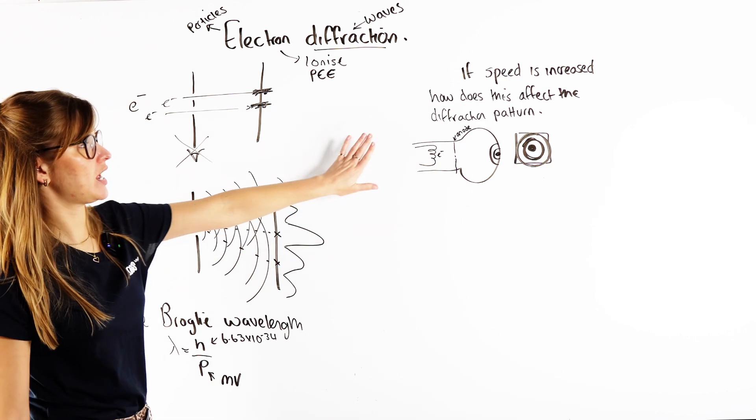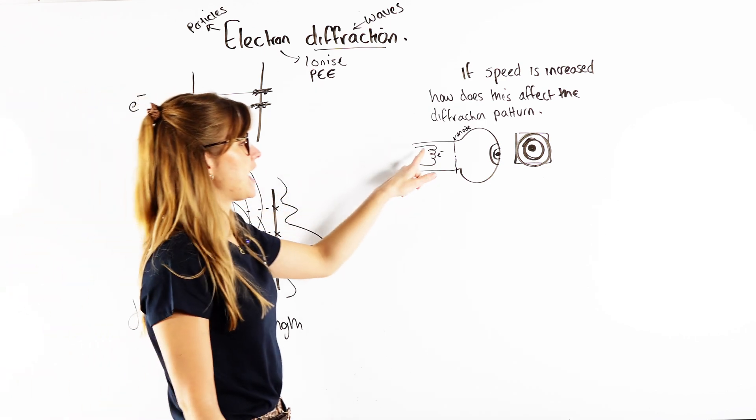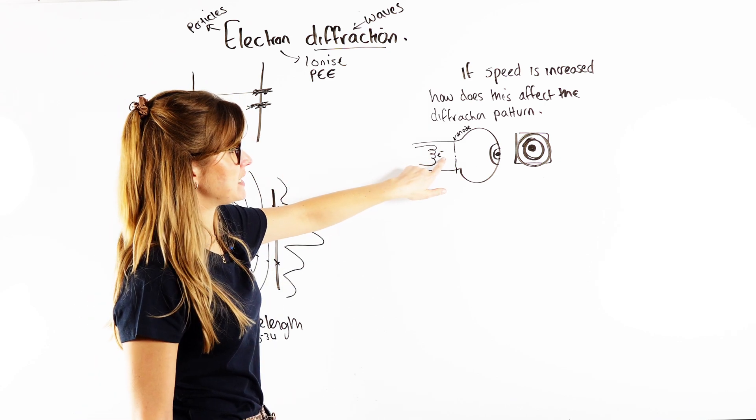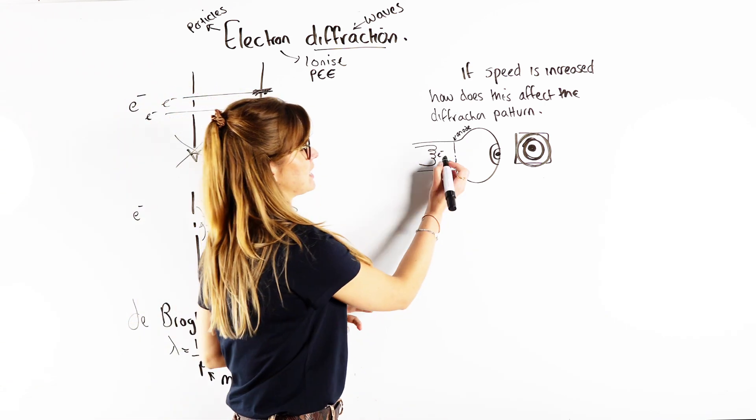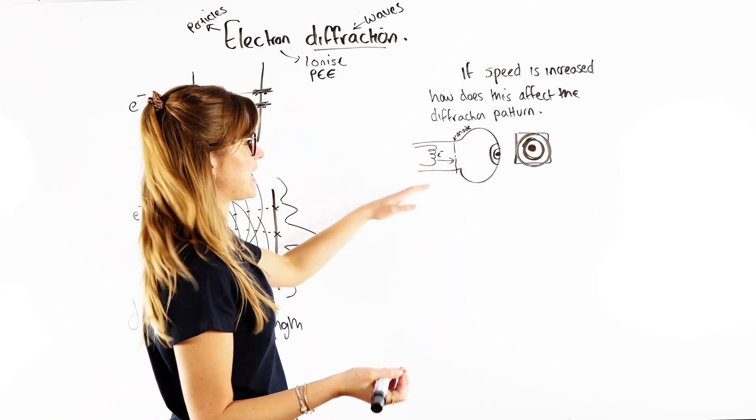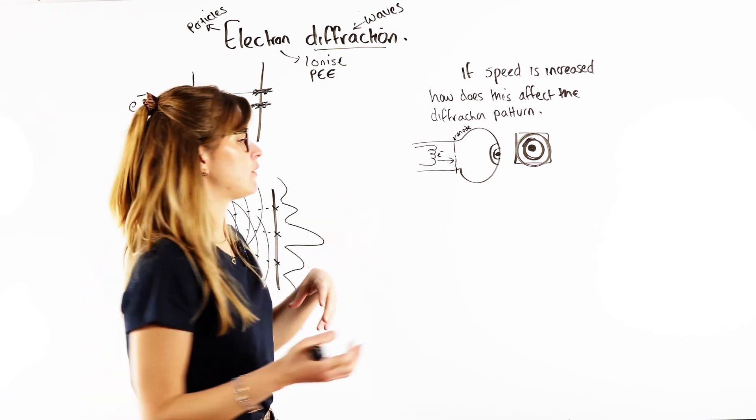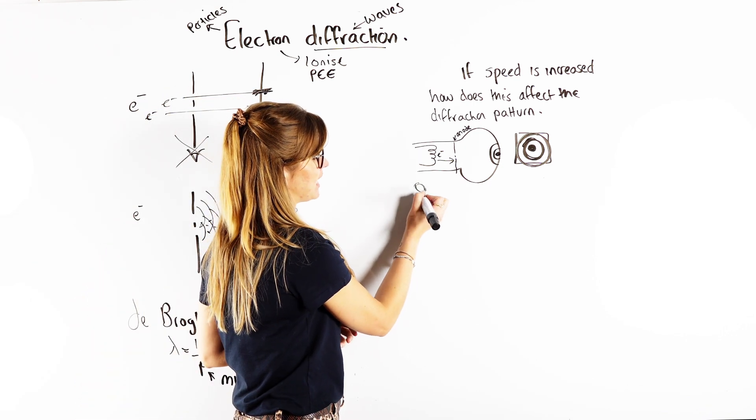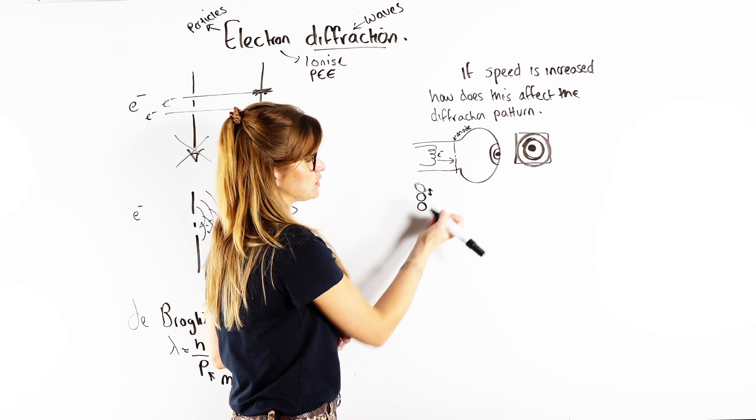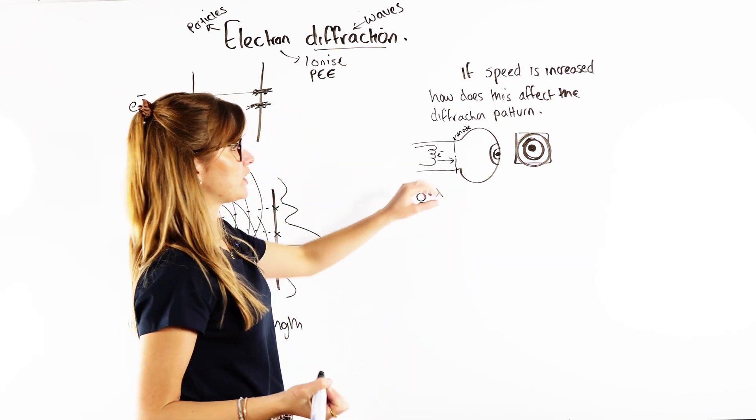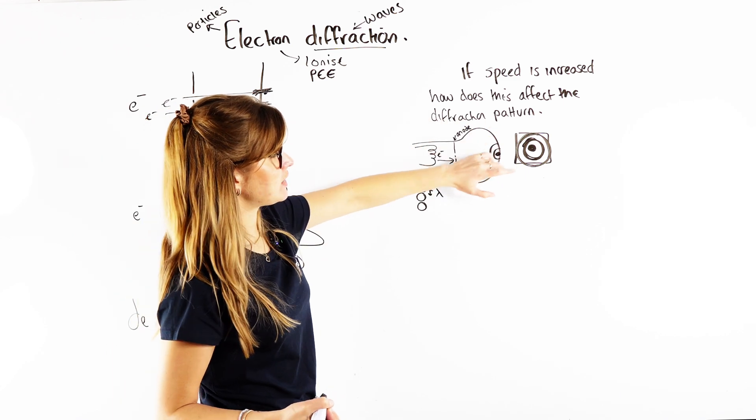So let's say we have an experiment now where we have some type of filament wire. So we know if we heat that wire up, that's when we get electrons to be emitted. And those electrons then might get accelerated towards some type of positive plate, towards an anode. And then we might have some type of atoms there, some type of lattice, and we know that the atoms, if the gap between the atoms is roughly equal in order of magnitude to the wavelength of our electrons, we're going to get diffraction to occur.